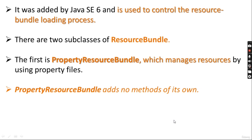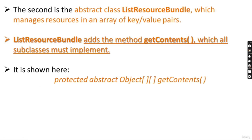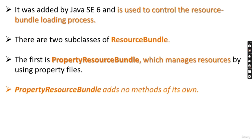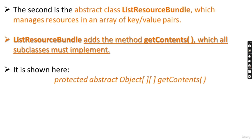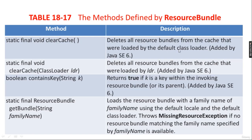Two subclasses of ResourceBundle are available. First is PropertyResourceBundle, which manages resources by using property files and has no methods of its own. Second is the abstract class ListResourceBundle, which manages resources in an array of key-value pairs. ListResourceBundle adds the method getContents(), which all subclasses must implement — declared as: protected abstract Object[][] getContents().